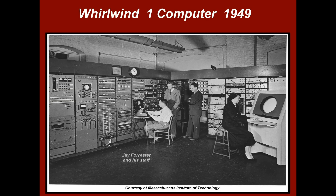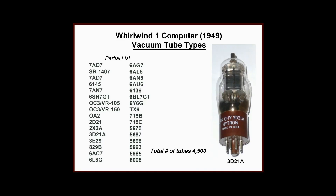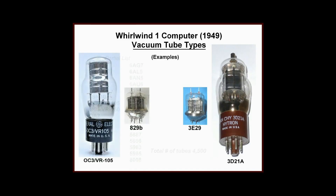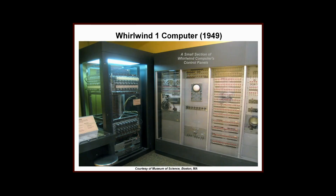The Whirlwind computer used over 32 different types of tubes, about 4,500 tubes in all. Tube types found in the Whirlwind were also present in the IBM SAGE computers, since the technology was similar.